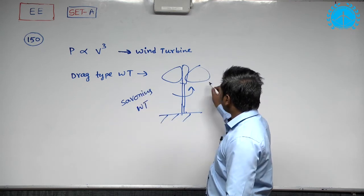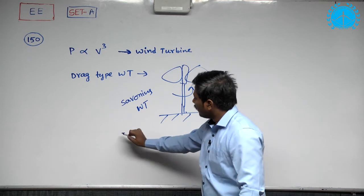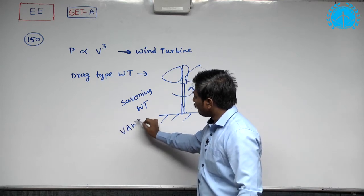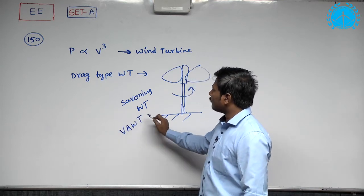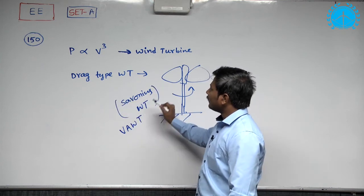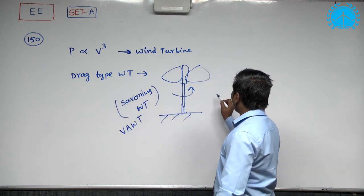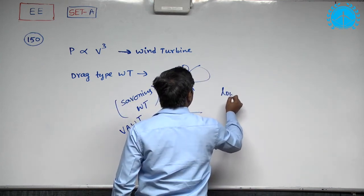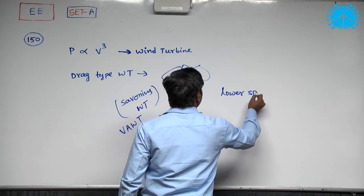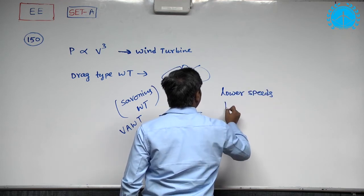Wind turbine and moreover, one more name I said you, vertical axis wind turbine. So, this will be used for lower speeds and high torque.